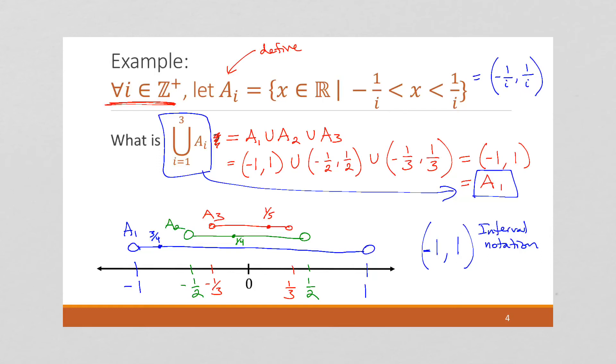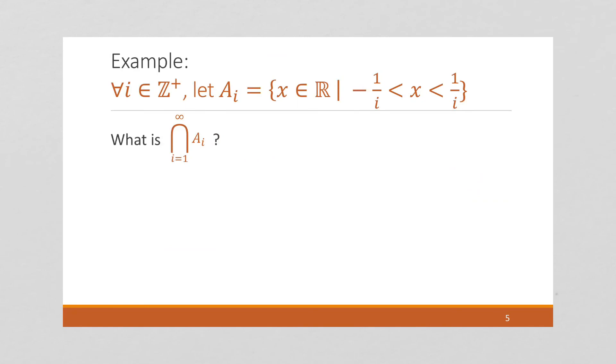Okay, let's do one more like this. We've got the same set, except now I'm asking, what is the intersection? And we're getting the intersection going all the way to infinity. So, again, let's draw this number line.